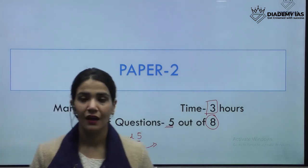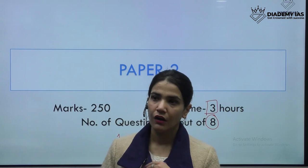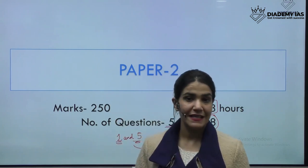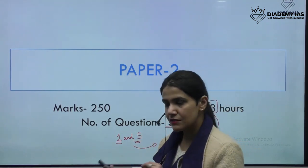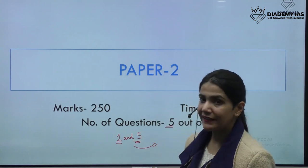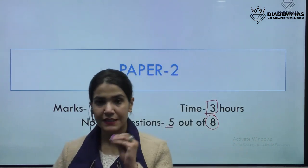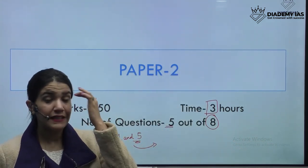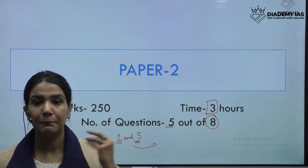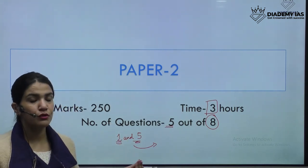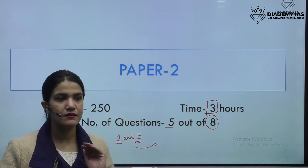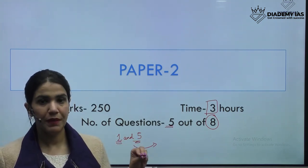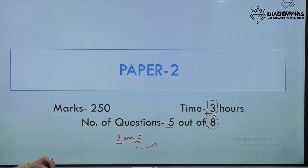For many students, the real phobia comes in Paper 2. Believe me — Paper 2 is just like Paper 1, there is absolutely no difference. Yes, the syllabus is a little bit vast, I admit that, but once you get an understanding of the syllabus and start practicing, answer writing is the key. The optional paper can make or break your result. You have to move out of the phobia, follow the right strategy in a disciplined manner, and you can clear this optional paper very easily.